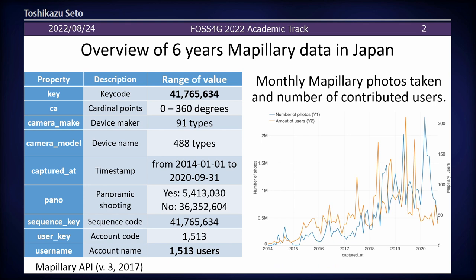I will give an overview of six years of Mapillary data for Japan. This is a summary of the Mapillary data — about 41 million images, a very large and huge dataset. In the Japanese situation, Mapillary started in 2014, and the total Japan data-collecting users number only about 1,000 users. This time series shows Mapillary photo uploads and user participation in Mapillary projects.